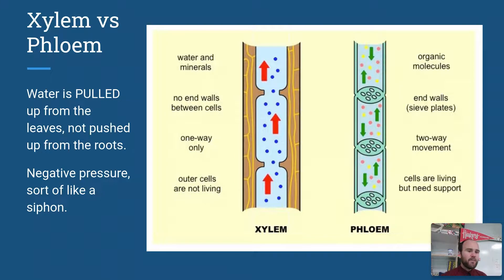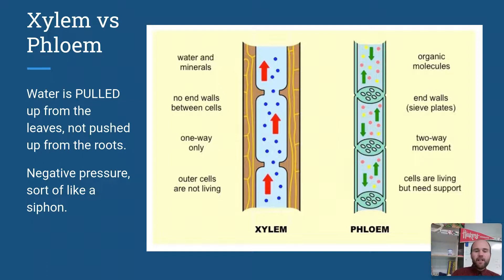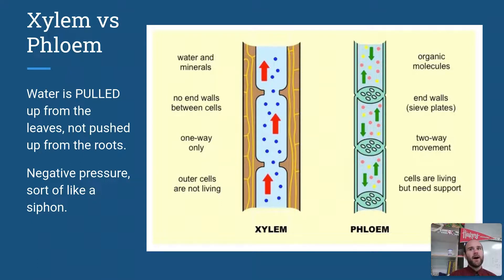Water is going to be pulled up through the xylem, along with any minerals taken up through the soil. While xylem vessels are individual cells stacked up next to each other, there are no end walls between them, so it's kind of a continuous tube and it's one-way transport — only going from the roots up. Water is never pushed back down towards the roots.